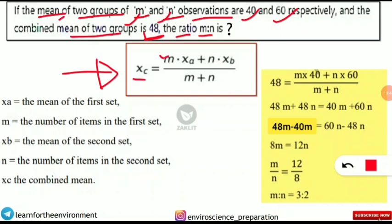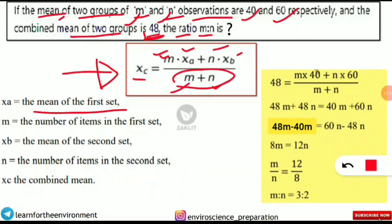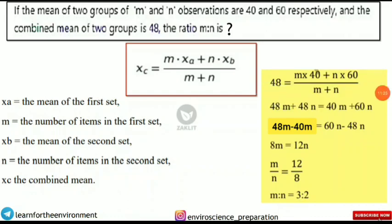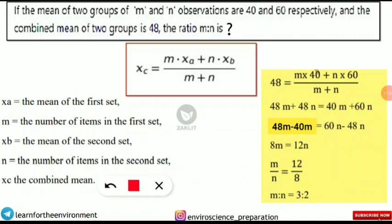The combined mean formula is: Xc = (m × Xa + n × Xb) / (m + n), where m and n are the number of items in each group, and Xa and Xb are their respective means. Substituting the values: 48 = (m × 40 + n × 60) / (m + n). Cross-multiplying gives: 48m + 48n = 40m + 60n.